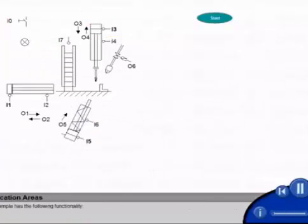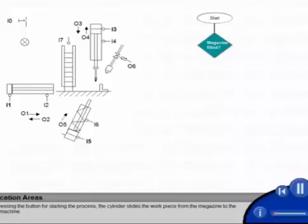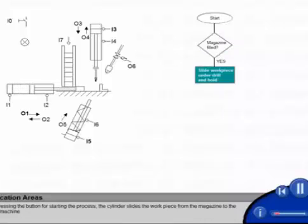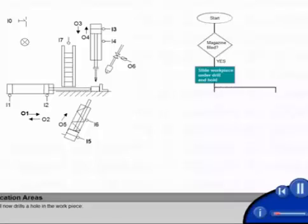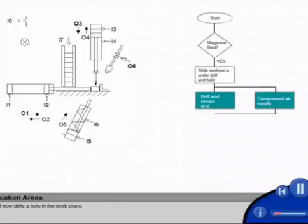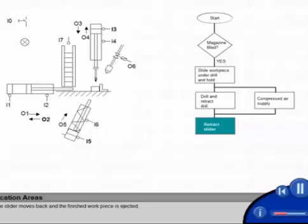Our example has the following functionality. After pressing the button for starting the process, the cylinder slides the workpiece from the magazine to the drilling machine. The drill now drills a hole in the workpiece. During the drilling process, compressed air for chip removal is applied until the drill is back in the starting position.